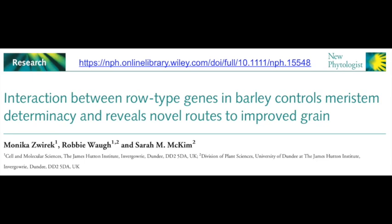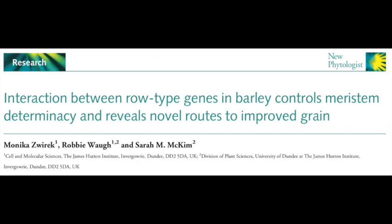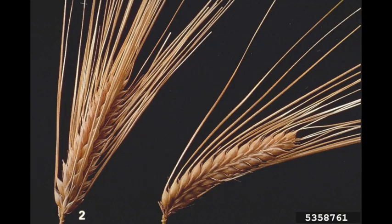Sure, I'm happy to do that. Thank you for the opportunity. This paper describes a study we did to try to uncover more about how a barley inflorescence grows. Barley is characterized by having a spike-like inflorescence, which means at the top of its stem it has a compressed series of spikelets. Spikelets are the basic reproductive unit found in grasses, and barley is similar to wheat in having this spike inflorescence lined with spikelets.